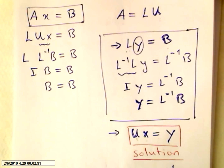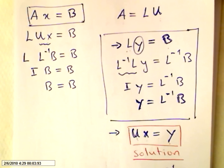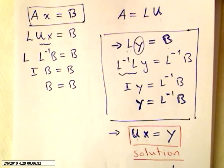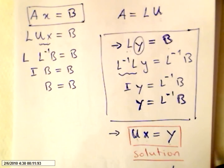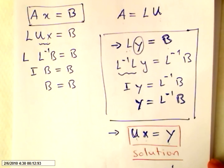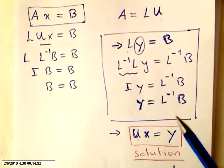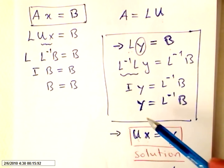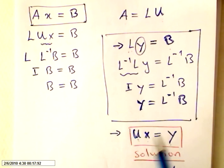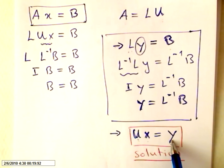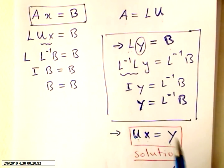This is the fourth video, I believe, about the problem of solving a system of equations with LU decomposition. On the previous video we found Y — we got W1, W2 and W3.